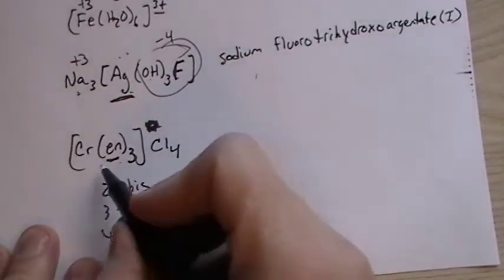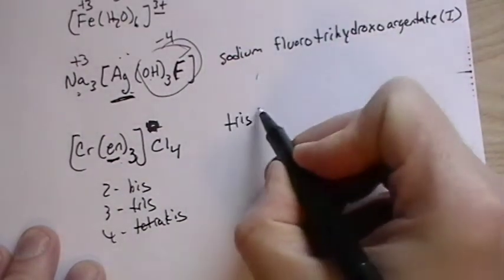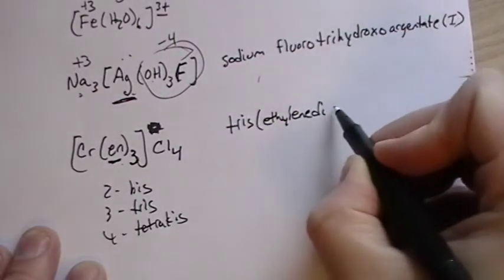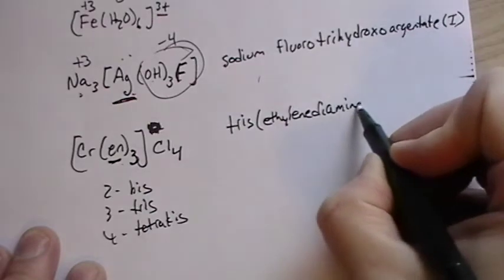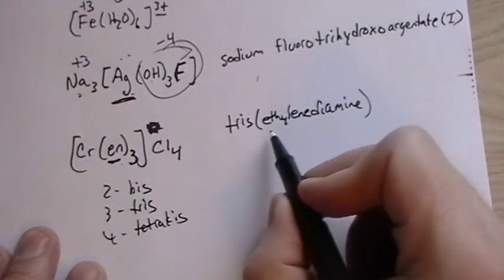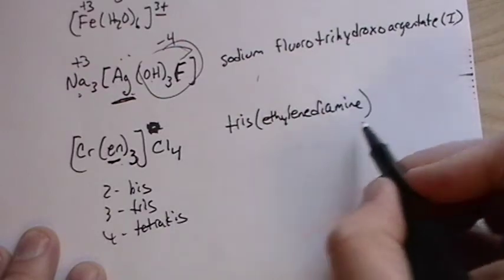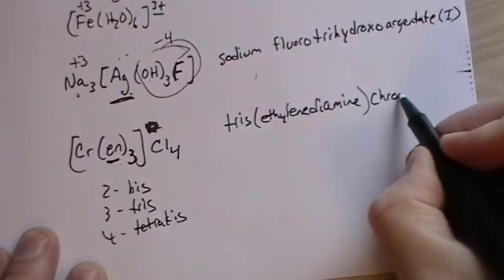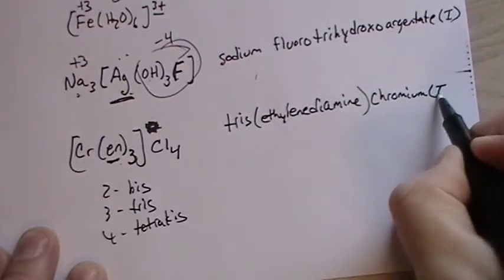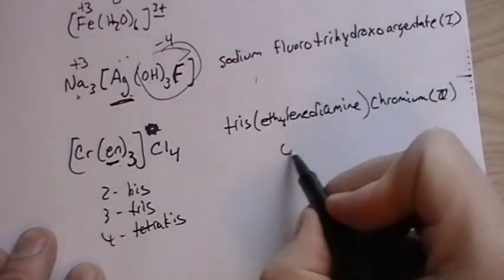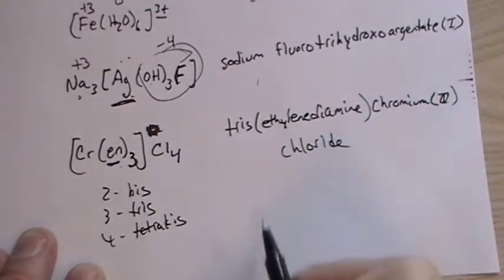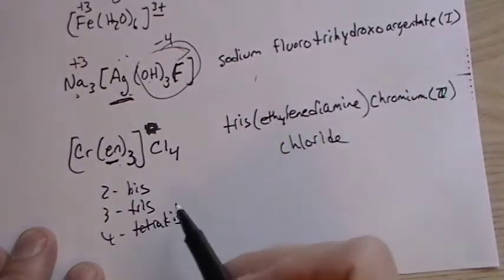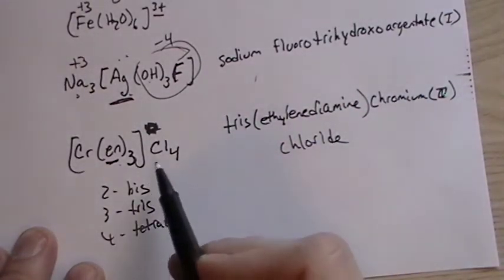So if we look at this, this would be called tris ethylenediamine. And you don't really, I think the book uses the parentheses, you don't have to, but that does help out as well. So tris ethylenediamine, this must be plus four, so this is chromium(IV), because we don't change it to chromate because it's the cation, and then we just call it chloride. And if you're given the name, knowing the charge on the chloride is minus one, and knowing this information, you should be able to find the formula.